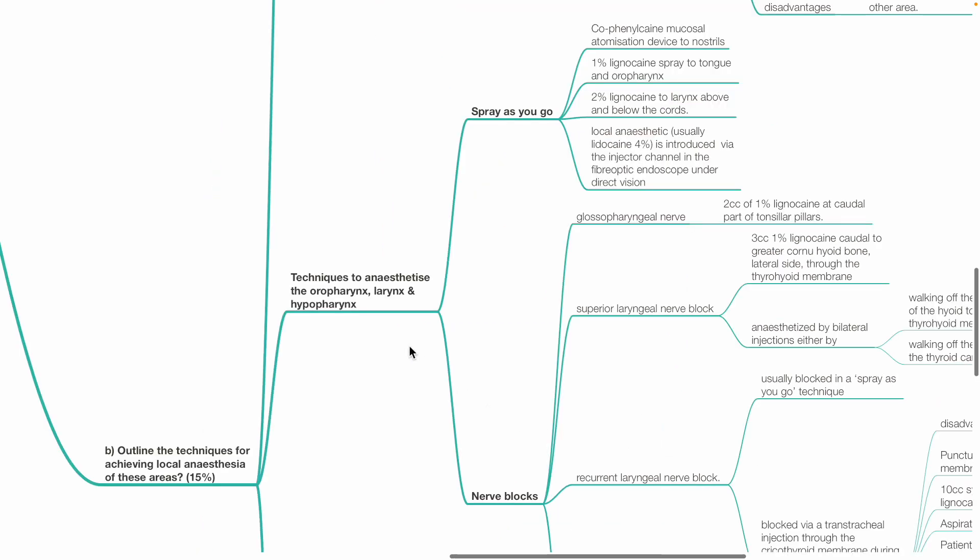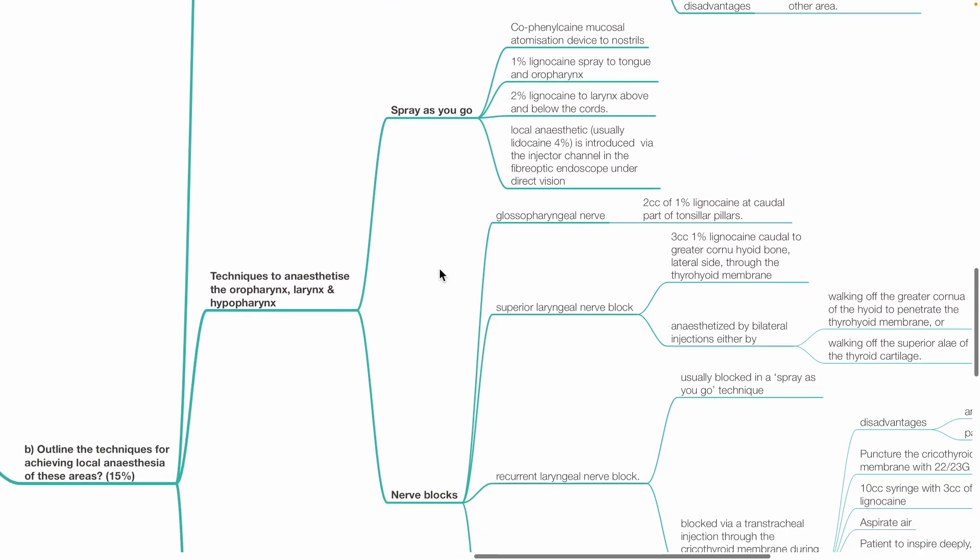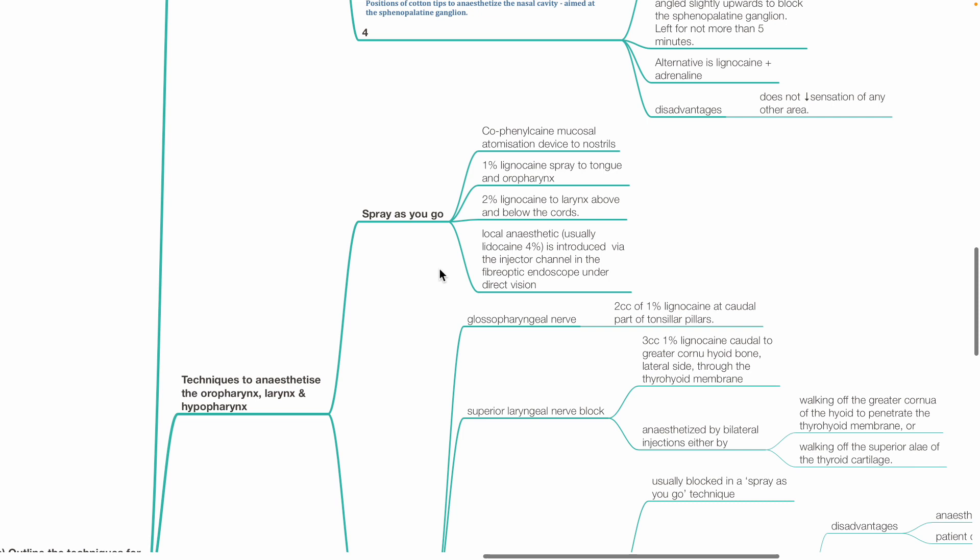Techniques to anesthetize the oropharynx, larynx and hypopharynx: Spray-as-you-go technique or nerve blocks. For spray-as-you-go, cophenylcaine mucosal atomization device to the nostrils. 1% lidocaine spray to tongue and oropharynx. 2% lidocaine to larynx above and below the vocal cords. LA, usually lidocaine 4%, is introduced via the injector canal in the fiber optic endoscope under direct vision.